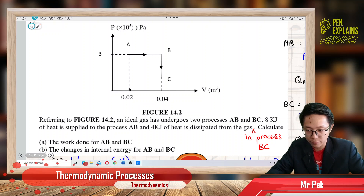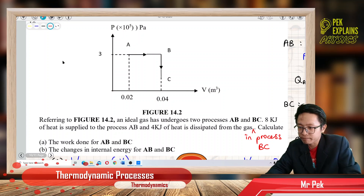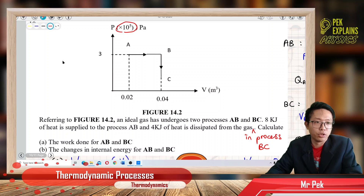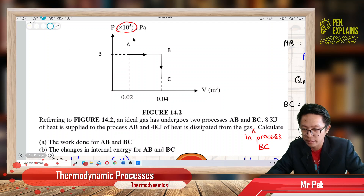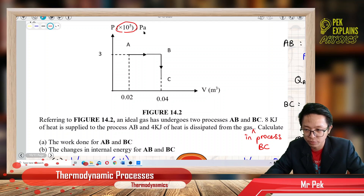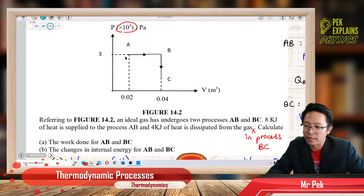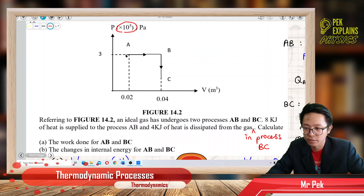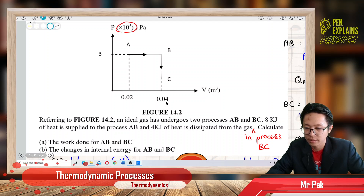So, information given. First of all, you must check the axis — it has an exponent. Make sure you don't miss out the exponent in the calculation. It's already in SI units — Pascal and meter cubed — so no worries about the unit. AB is an isobaric process, meaning constant pressure at 3×10^5. And BC has the same volume — it's an isochoric process — constant volume at 0.04 meter cubed.